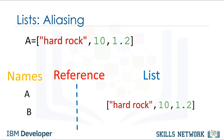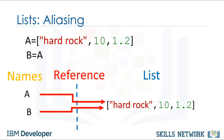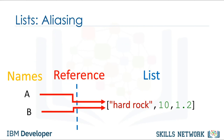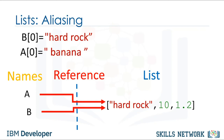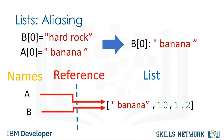When we set one variable B equal to A, both A and B are referencing the same list. Multiple names referring to the same object is known as aliasing. We know from the list slide that the first element in B is set as hardrock. If we change the first element in A to banana, we get a side effect — the value of B will change as a consequence, because A and B are referencing the same list. If we check the first element of B after changing list A, we get banana instead of hardrock.